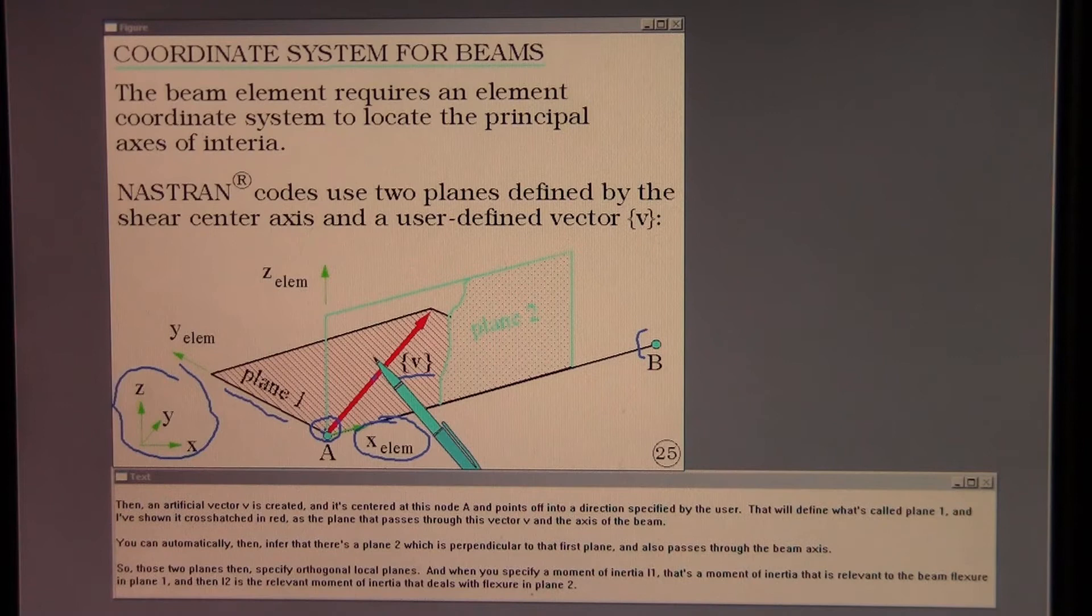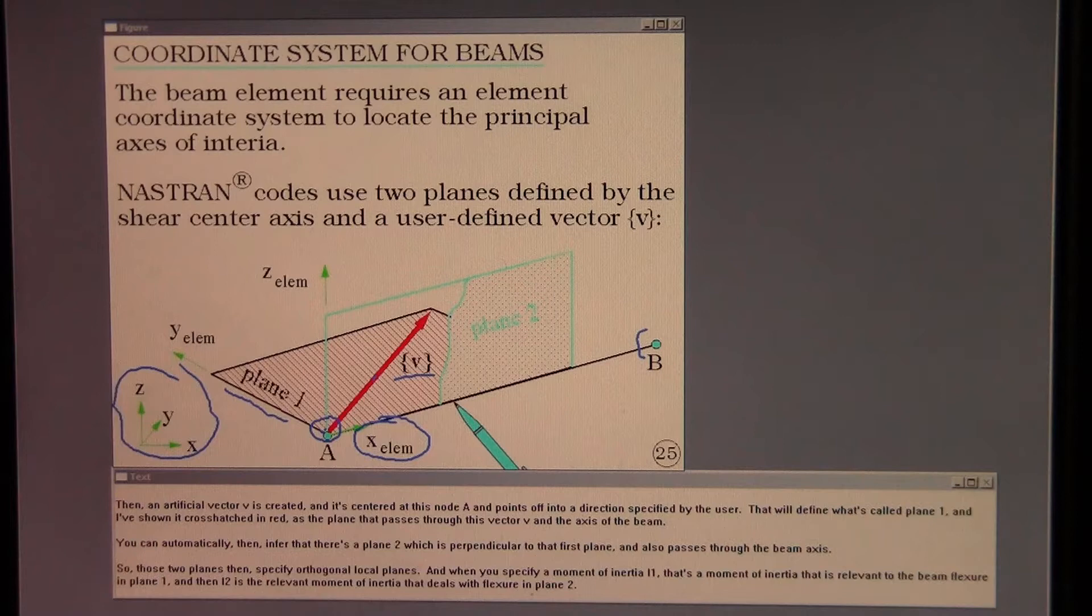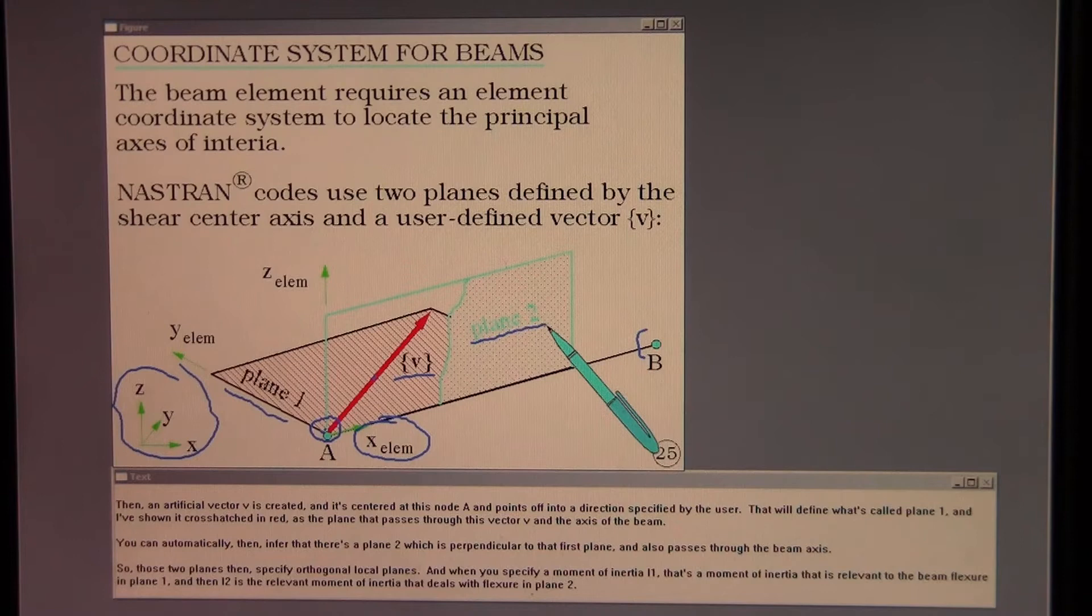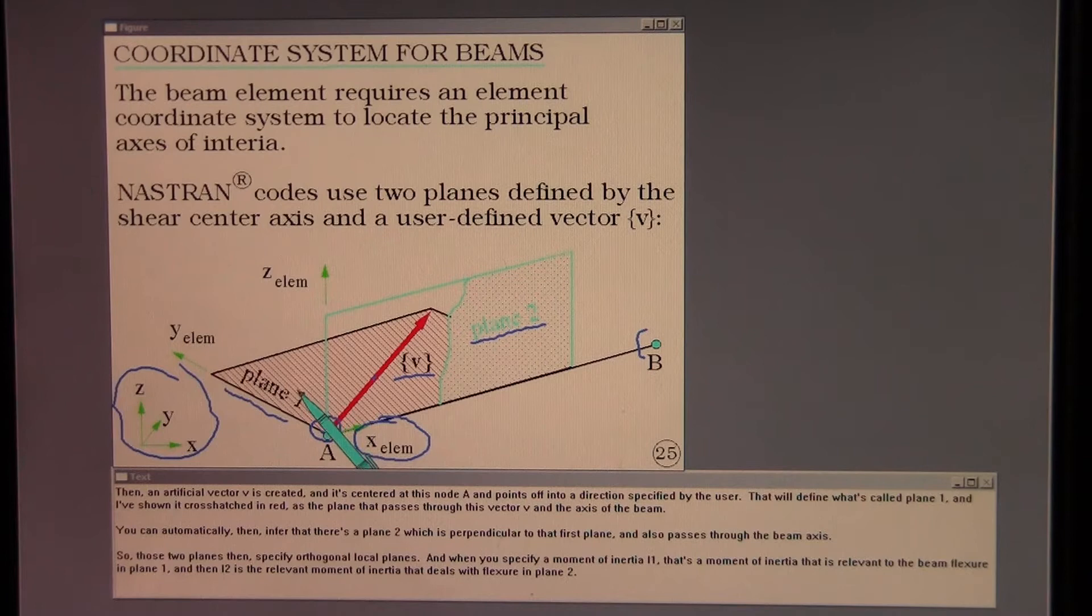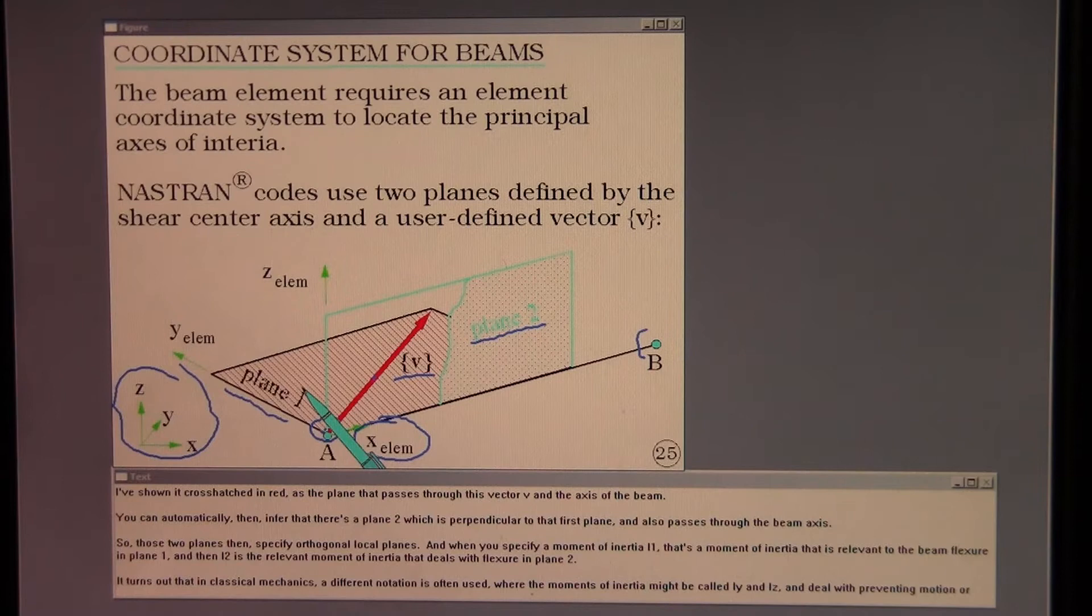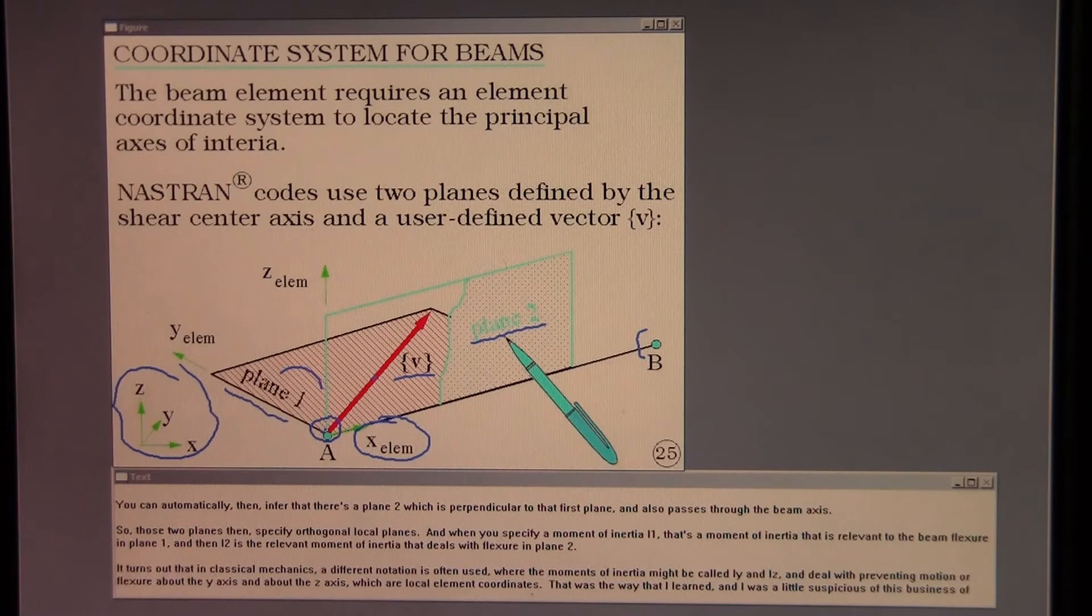That will define what's called plane 1. And I've shown it cross-hatched in red as the plane that passes through this vector V and the axis of the beam. You can automatically then infer that there's a plane 2 which is perpendicular to that first plane and also passes through the beam axis. So those two planes then specify orthogonal local planes. And when you specify a moment of inertia I1, that's a moment of inertia that is relevant to the beam flexure in plane 1. And then I2 is the relevant moment of inertia that deals with flexure in plane 2.